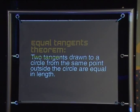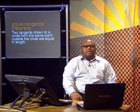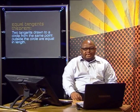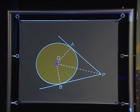The theorem states that two tangents drawn to a circle from the same point outside the circle are equal in length. What sort of diagram would we need? We need a circle with centre O. We need two tangents from the same point outside the circle. So if we make a point P outside the circle we can draw the two tangents to the circle from this point.